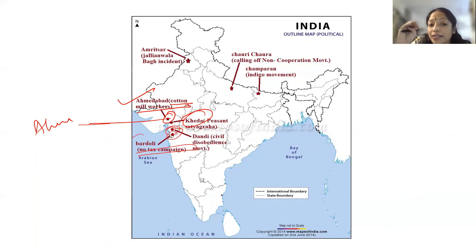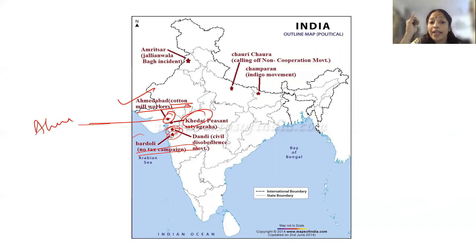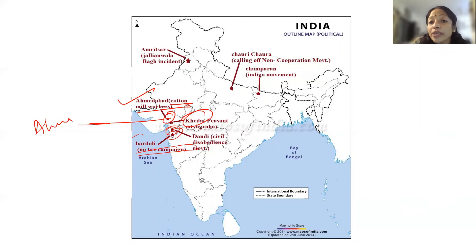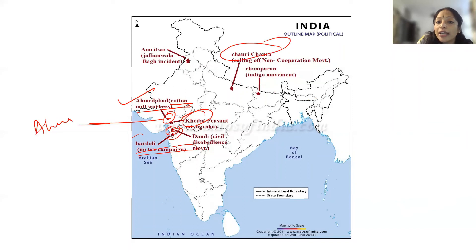Then you have Bardoli — the No Tax Campaign. Gujarat is important because there are four places to mark: Ahmedabad, Kheda, Dandi, and then in the corner you have Bardoli. Then, where the Non-Cooperation Movement was called off — that is Chauri Chaura, and it is here.